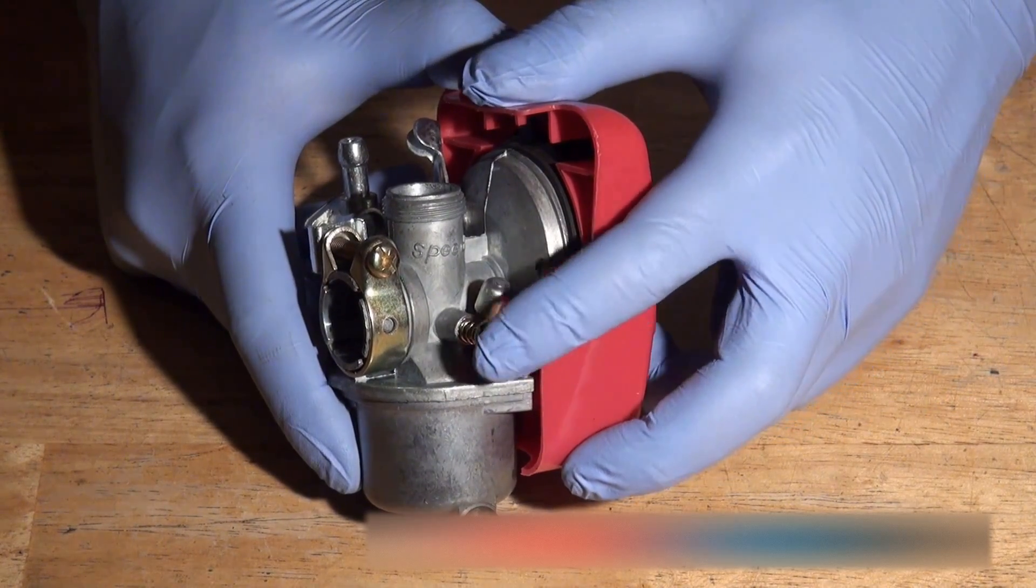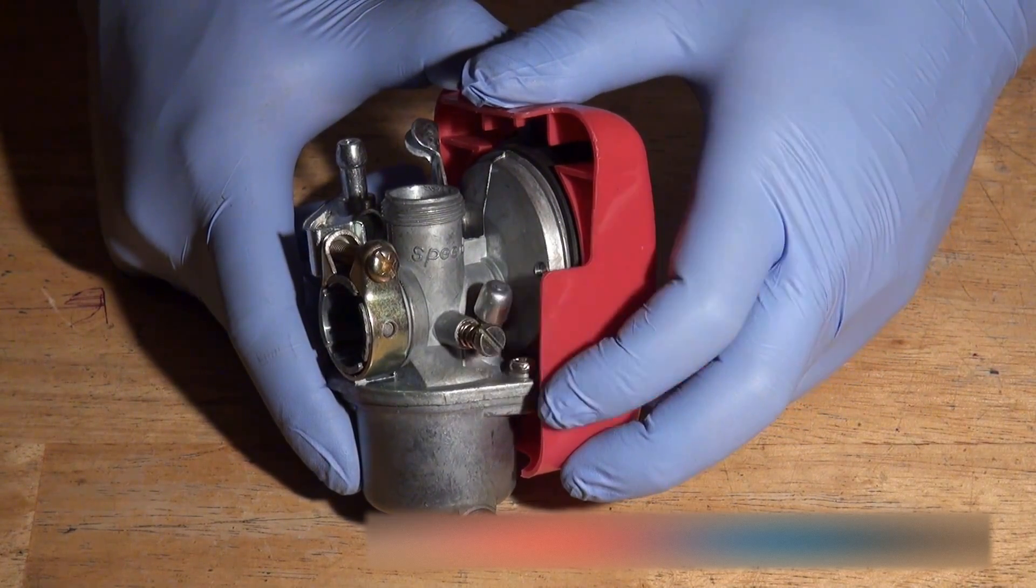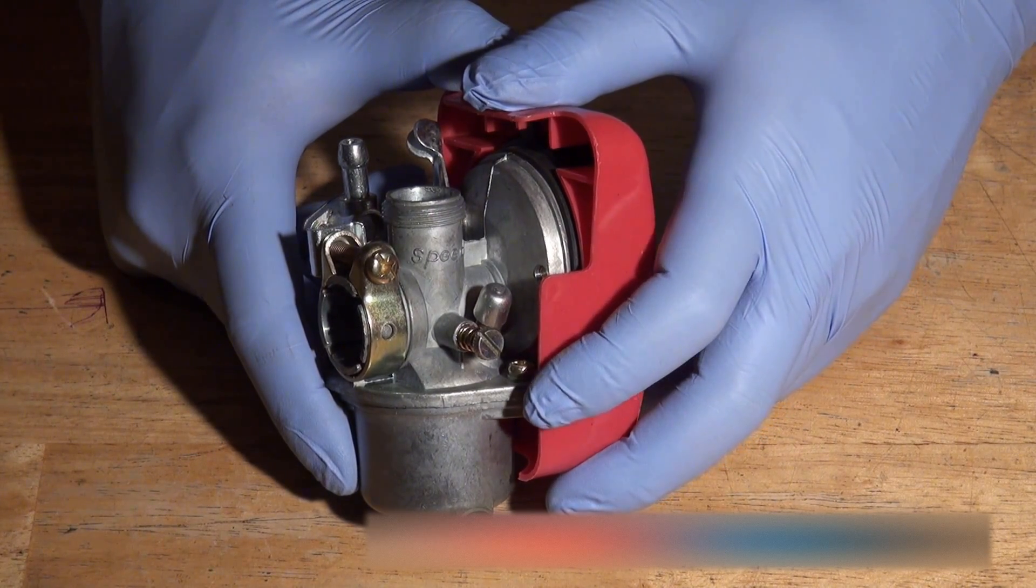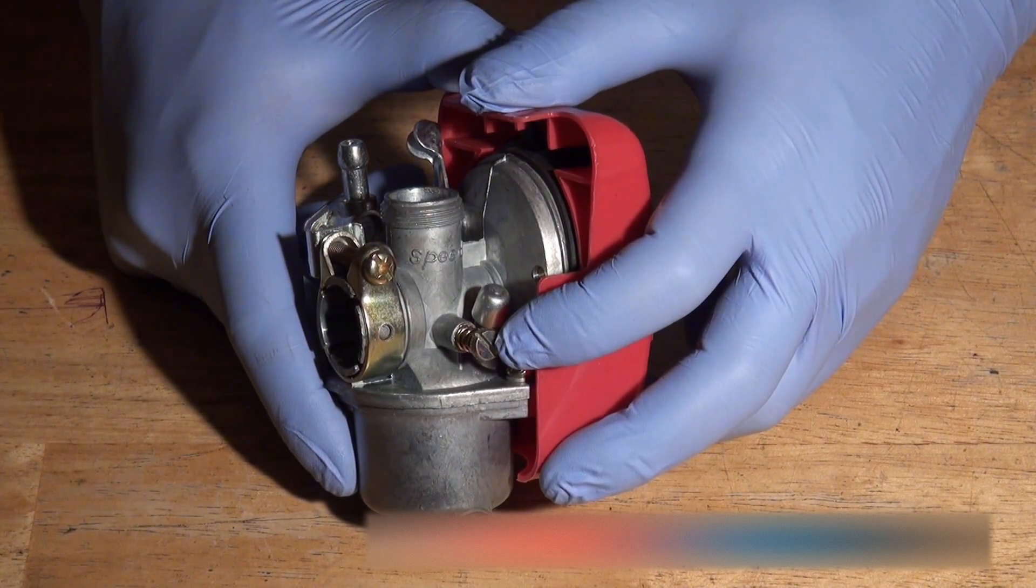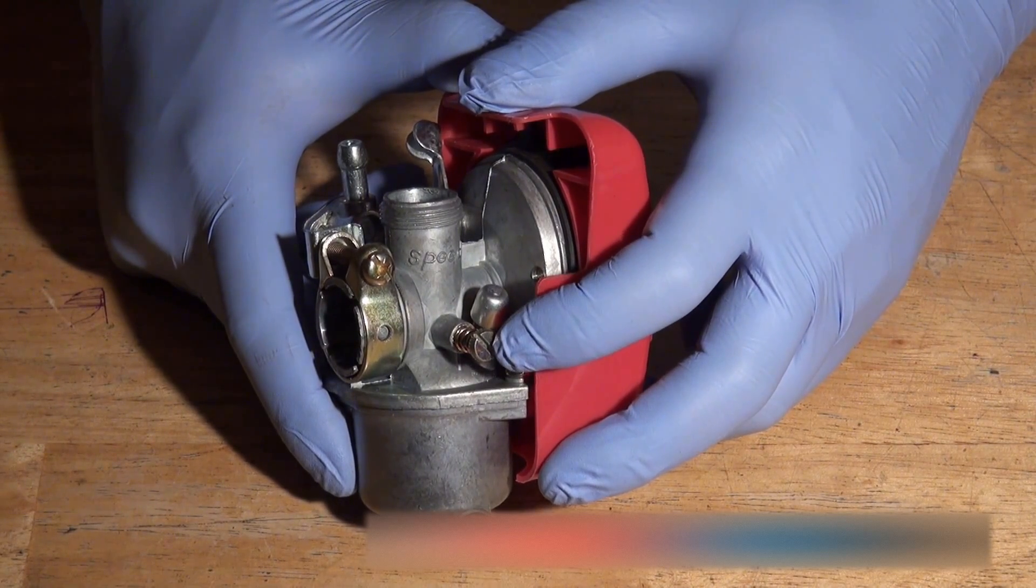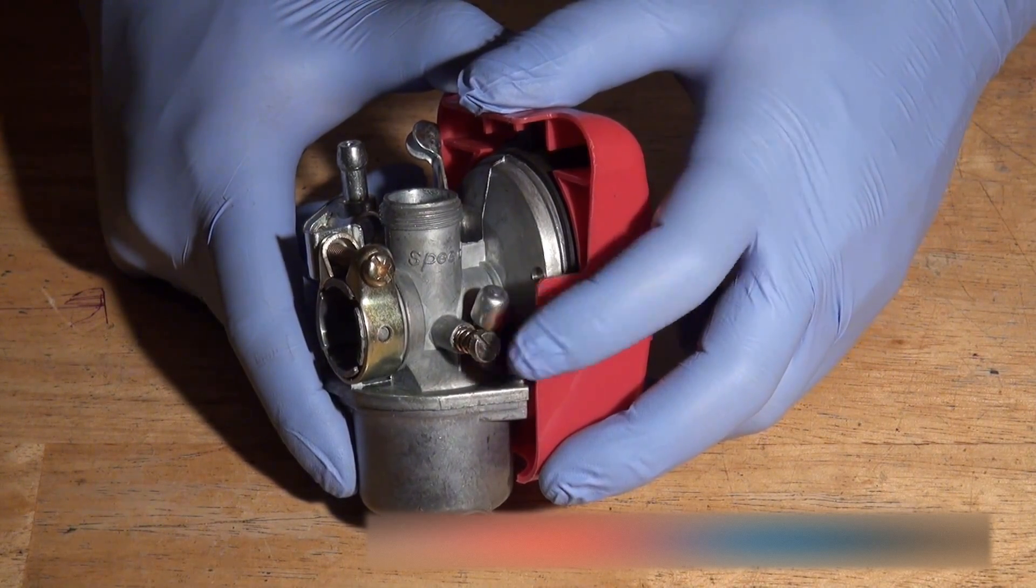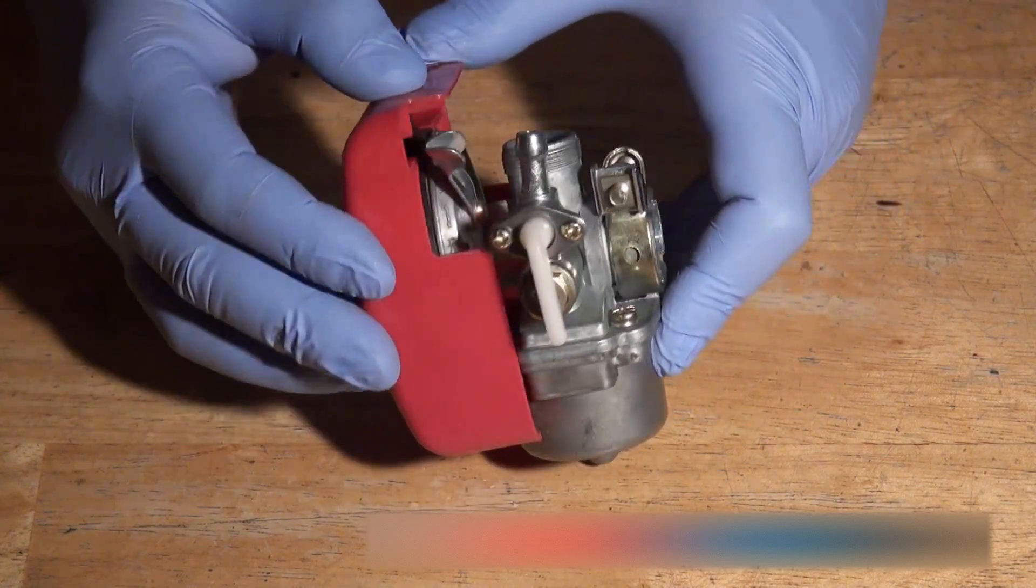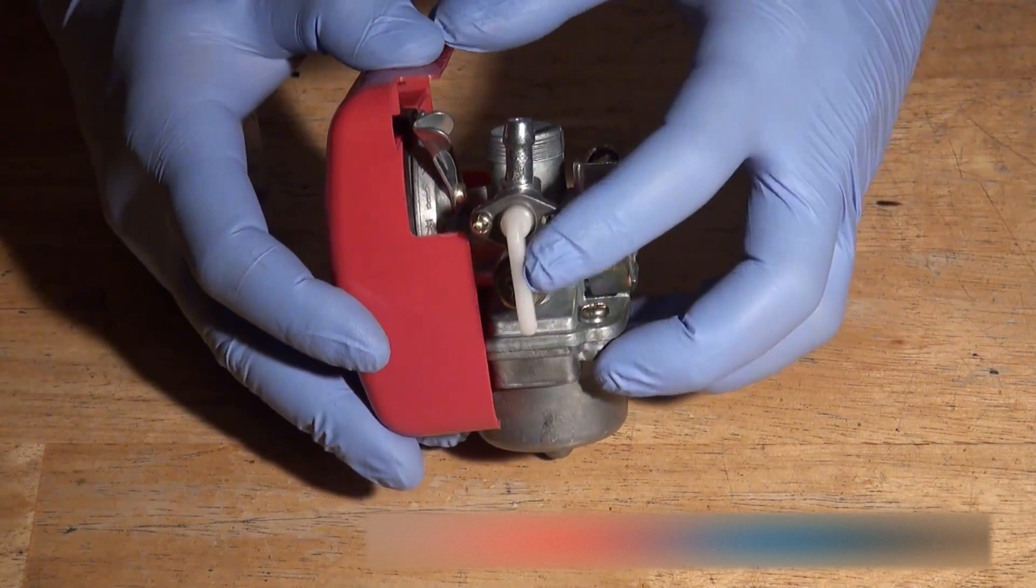So that's pretty much that basically. Those are the two main points, the two main parts which need adjusting on the carburetor. One is the idle adjustment screw, and the other one is the fuel switch here.